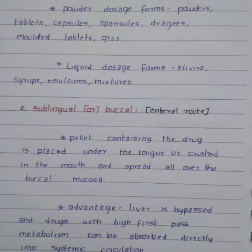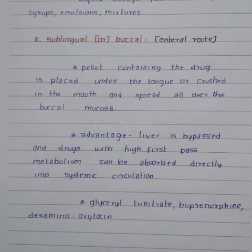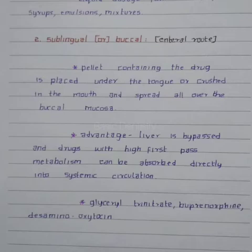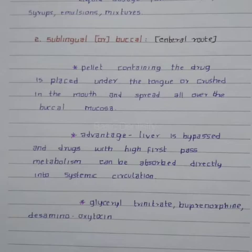The sublingual or buccal route is also an enteral route. In this, a pellet containing the drug is placed under the tongue or crushed in the mouth and spread over the buccal mucosa. The advantage is that the liver is bypassed and drugs with high first-pass metabolism can be absorbed directly into systemic circulation. Substances given via this route include glyceryl trinitrate, buprenorphine, and oxytocin.